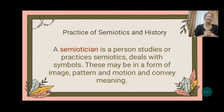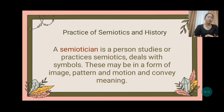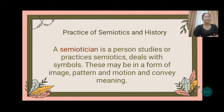A semiotician is a person who studies or practices semiotics. We, as semioticians, deal with symbols — in the form of images, patterns, and motions — that convey meaning. Truthfully, everyone is a semiotician, because everyone is constantly and unconsciously interpreting the meaning of signs around them — from traffic lights, the color of flags, emojis, the shape of cars, and logo brands.